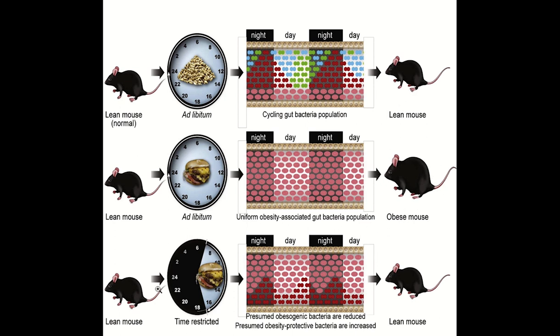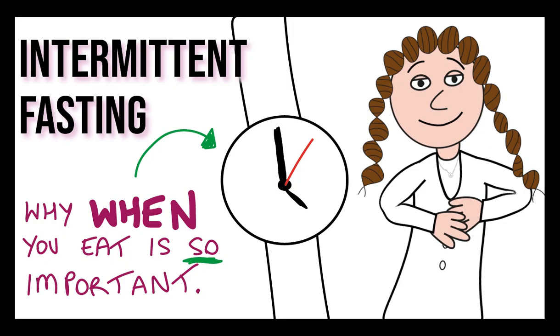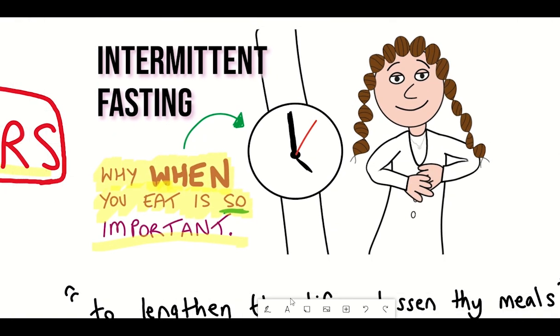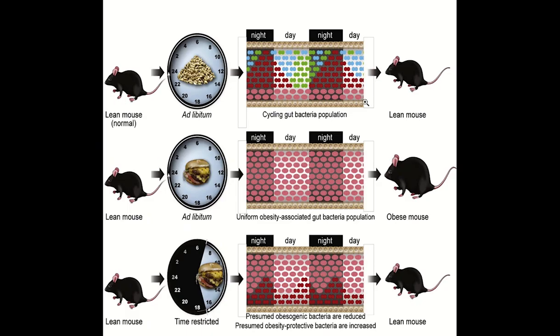However, when they use time restricted feeding, in which the feeding was just restricted to the nocturnal phase, which is when the mice would normally be active, it actually, to some extent, restored these cyclical fluctuations and prevented these mice from becoming obese. I like this study because it builds upon what I mentioned in my last video about the importance of intermittent fasting and how when you eat is actually important to consider. And it suggests that some of that beneficial impact of intermittent fasting may be mediated through promoting the fluctuations of the microbiome composition.